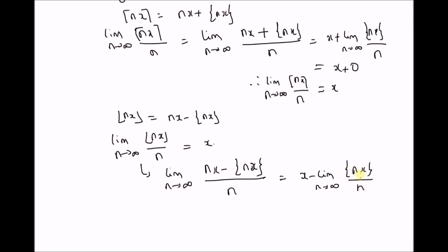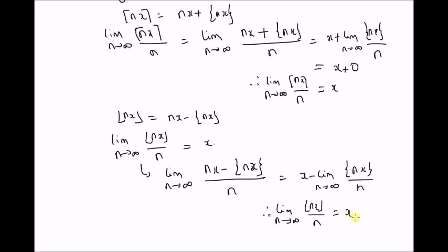This fractional value is always between 0 and 1, and this value reaches 0 in the limit. Therefore, the limit as n tends to infinity of the floor of nx divided by n is equal to x. Thanks for watching.